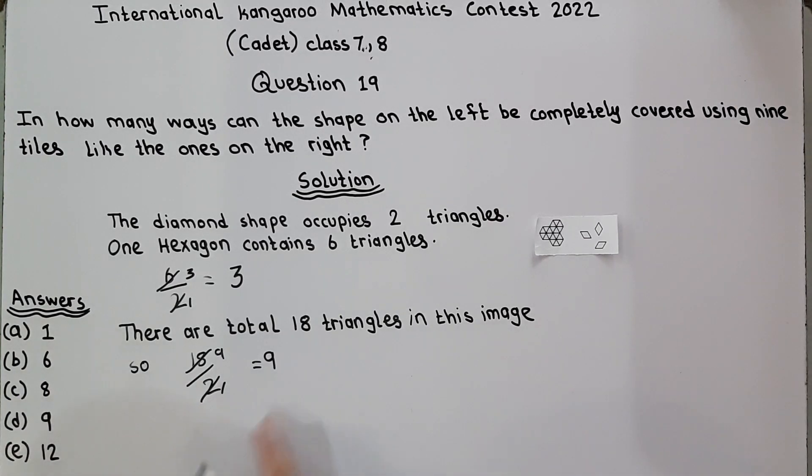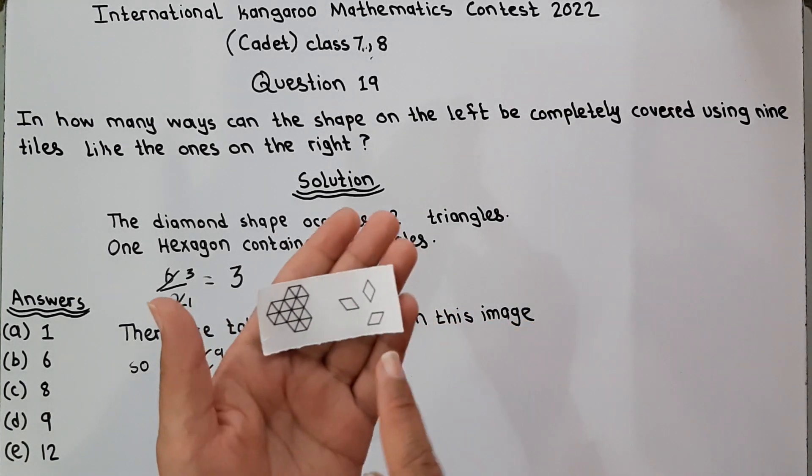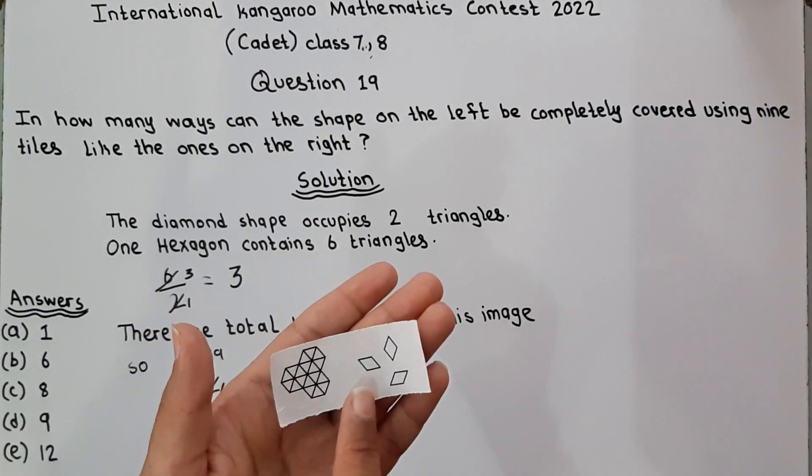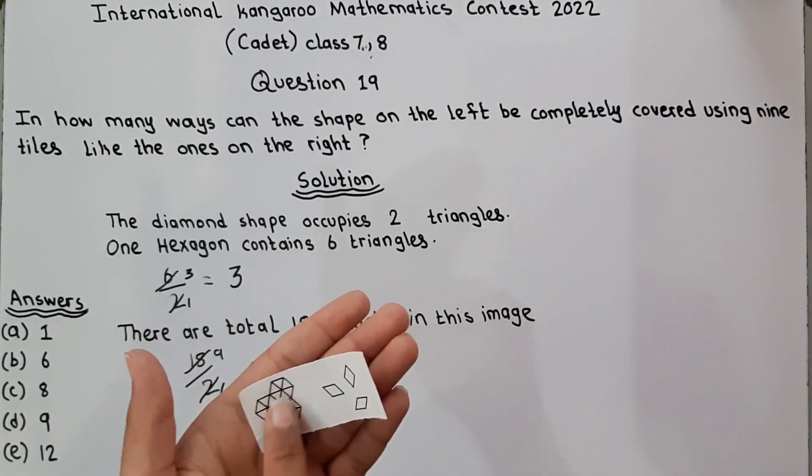So if we have nine diamond shape tiles, we can completely cover this image.